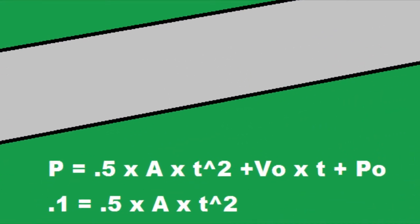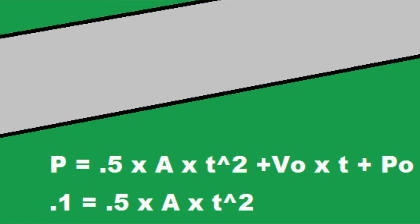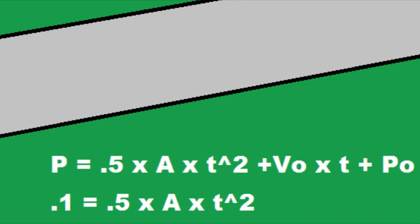Alright, so position equals half of acceleration times time squared plus velocity initial times time plus position initial. So we are going to define position initial as 0, and velocity initial is 0 as the question said. So we are just left with 0.1 miles equals one half times acceleration times time squared.